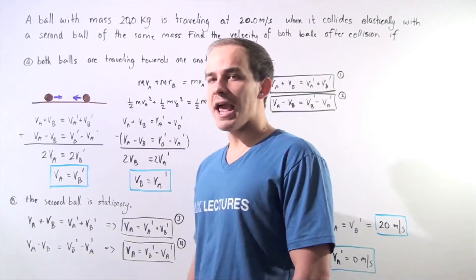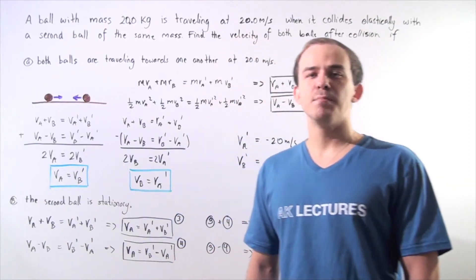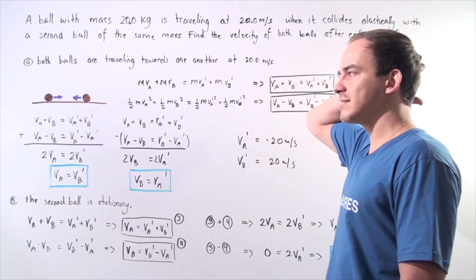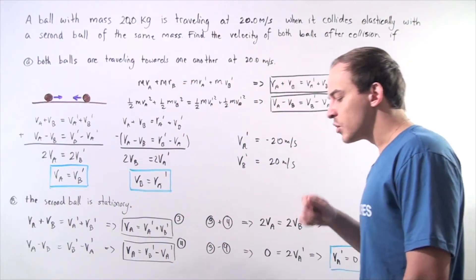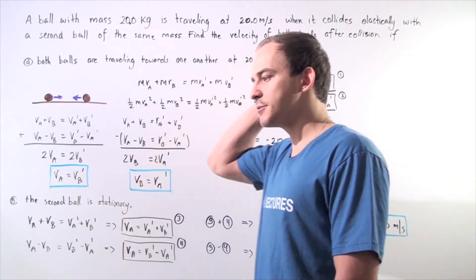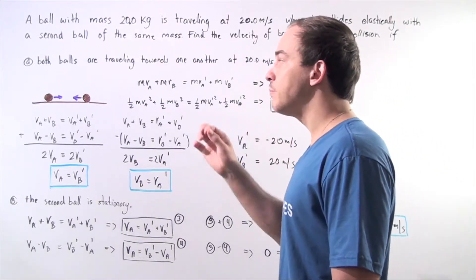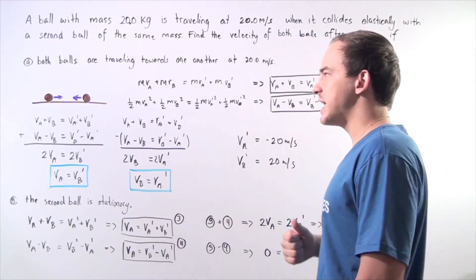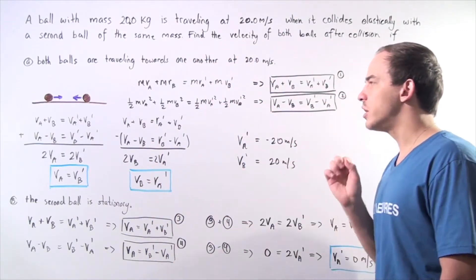Let's begin with Part A. We have two objects with the same mass and the same magnitude of velocity. Ball A is traveling in the positive direction along the x-axis and ball B is traveling in the negative direction. We know the mass and the velocities before collision. We're looking for two unknowns — V-A prime and V-B prime — so we need two equations.